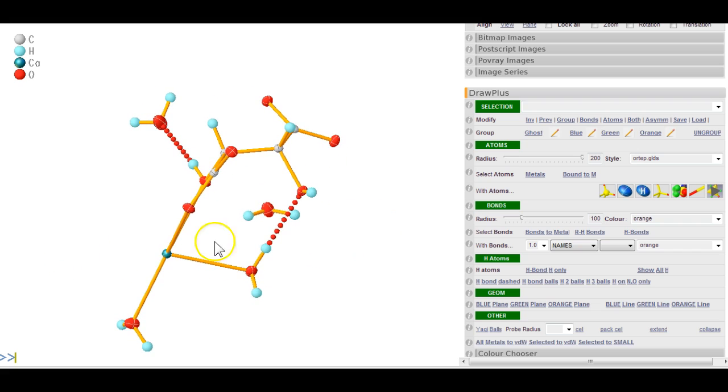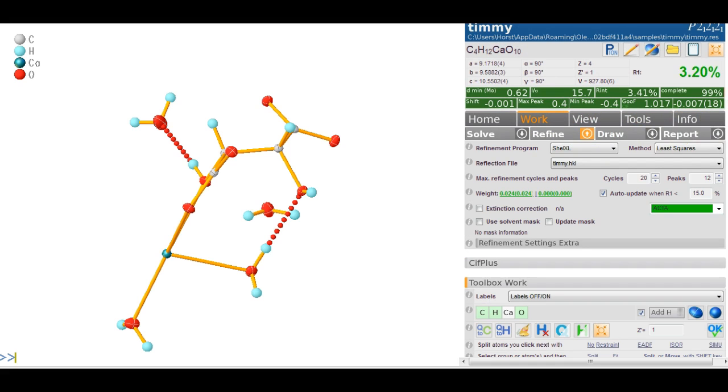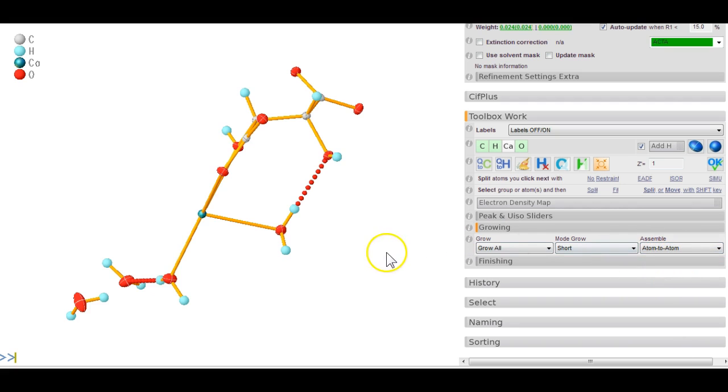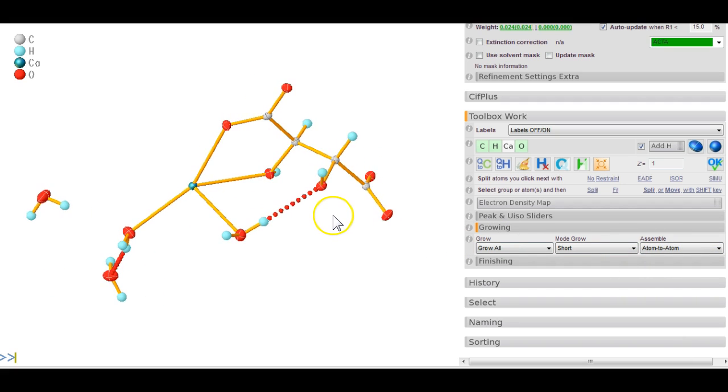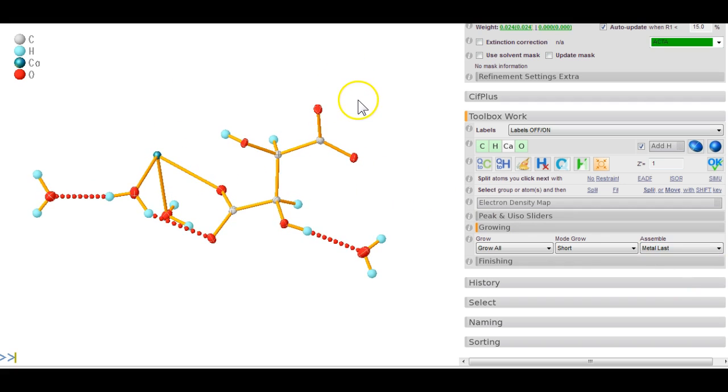The hydrogen bonding submitted in this structure isn't actually ideal. Let's go back to work and refine into the toolbox work. There's different ways of assembling this atom to atom. Metal last gives you a really nice result—now we see three hydrogen bonds all within that asymmetric unit.